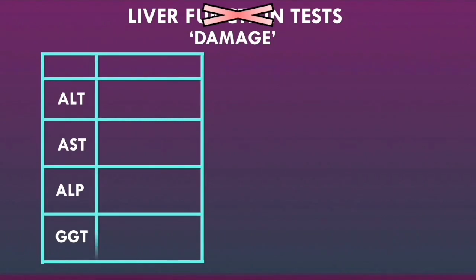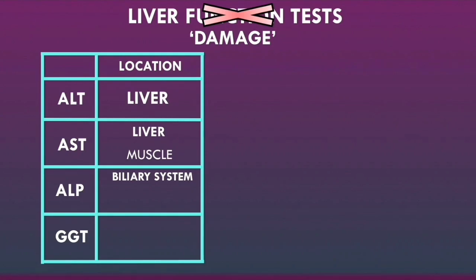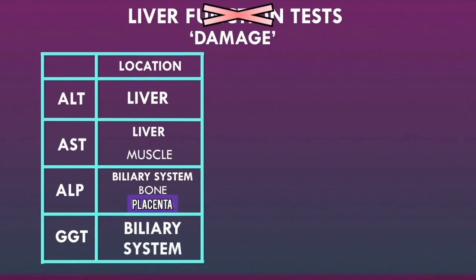The ALT enzymes are very specific to the liver — mainly found within the hepatocytes. The AST enzymes are also found within the liver, but are less specific; they can also be found in muscle tissue, specifically skeletal and cardiac muscle. The ALP enzyme is not in the hepatocytes; it is located within the biliary system, in the cells lining the biliary ducts inside and outside the liver, as well as in bone tissue and in the placenta of a pregnant woman. The GGT is very specific to the biliary system, found within the cells lining the bile ducts.